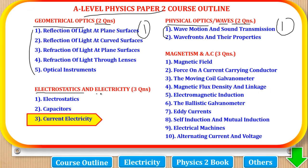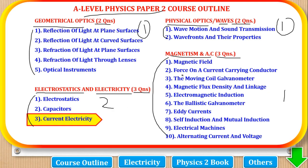The third one is electrostatics and electrics, where three questions come from these topics, and magnetism and AC, where three questions come from these topics. A student can choose to answer two from here and one from here to make the five questions, or answer one from here and two from here to still make the five questions. Any of the two options is okay.